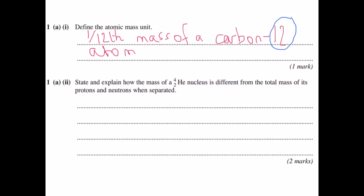So the next question says, state and explain how the mass of a helium nucleus is different from the total mass of its protons and neutrons when separated. The thing to think about here is that when you're trying to break apart a nucleus, you have to put energy in, obviously, to try and overcome the strong forces binding together. So if you have to put energy in to break it apart, that must mean that when it formed, you got energy out of it. So if you're getting energy out of it, you must have lost some mass for it to be turned into energy.